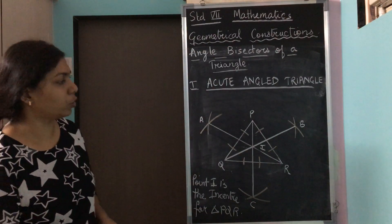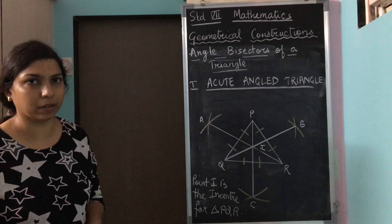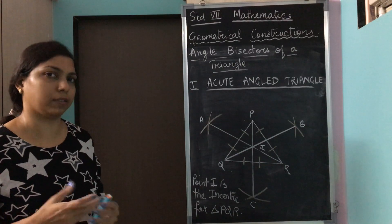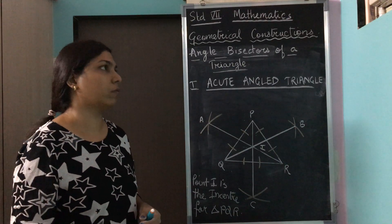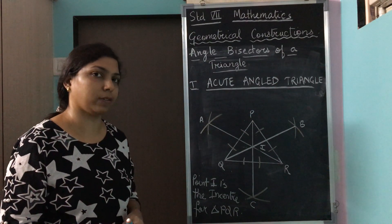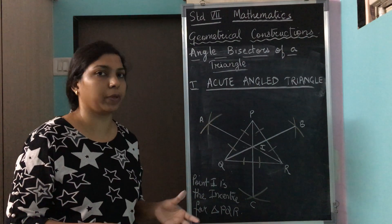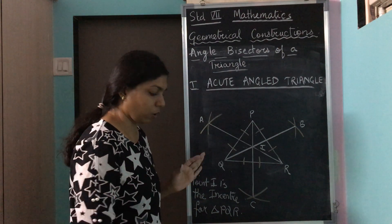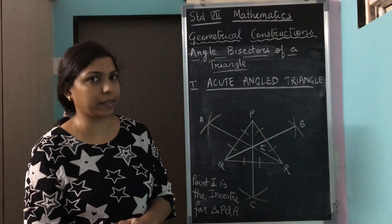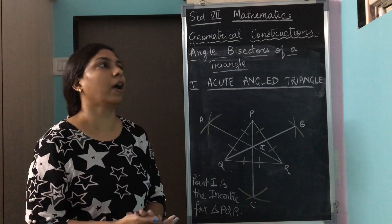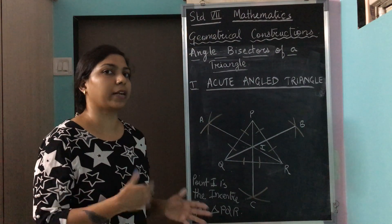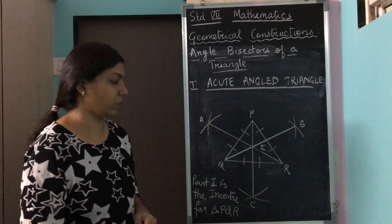This is how you do the construction for an acute angle triangle. For an obtuse angle triangle and a right angle triangle, you will do the construction yourself. After a day or two, I will do the construction on paper and send it to you on WhatsApp so you can check if you are getting a similar result. Please copy this down and complete it for an obtuse angle triangle and a right angle triangle — that will be the end of today's lesson. We will continue further in the next video. Thank you.